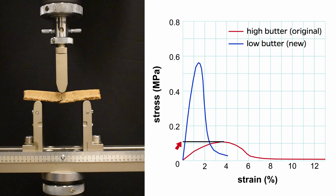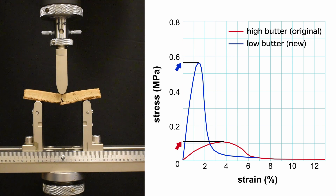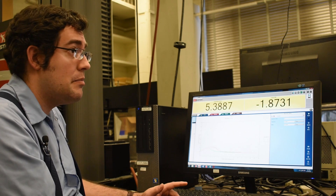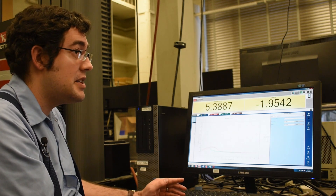As for strength, it's measured on the y-axis where we see stress in megapascals. If we look at the original cookie curves here, they have a failure strength around 0.1 megapascals. For the low butter cookies, they failed somewhere between 0.4 and 0.6 megapascals. So with lower butter, you have higher strength but lower ductility.